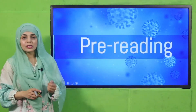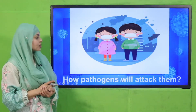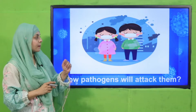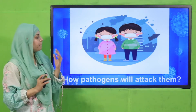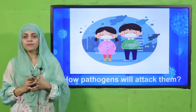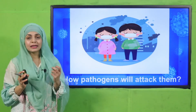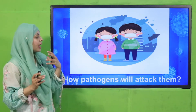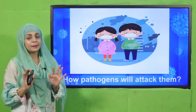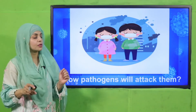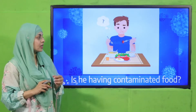Now is the time for the pre-reading question. Quickly tell me: how will pathogens attack? There are two children outside in a city — pathogens cannot attack them because they have covered their mouths, and if they go back home and wash their hands, they are completely safe from the germs.